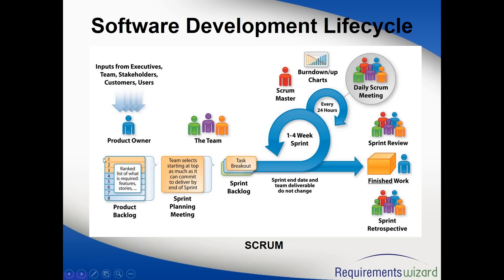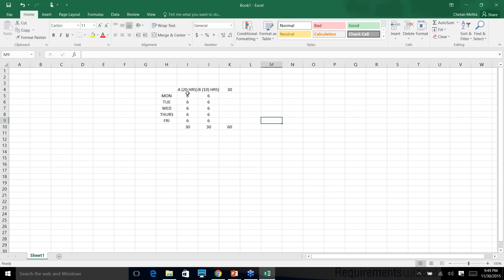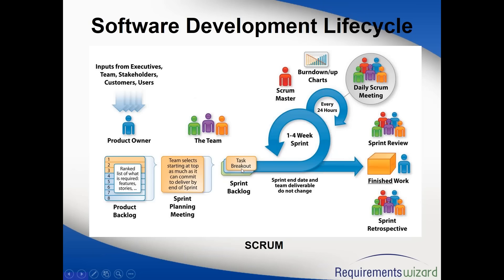The team reaches out to the BA to look at the backlog and pick stories that are ready for development. They do the sprint planning, and once done, the real sprint begins. Whatever work the team commits to in the sprint planning is known as the sprint backlog. Even if there are 50 stories in the product backlog, for that sprint the team is only concerned with the one or few stories they committed to.